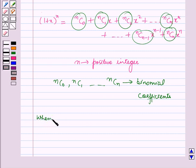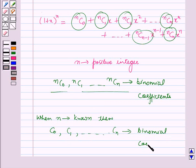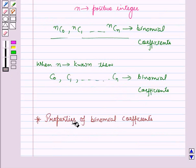When n is known, that is the index of the binomial is known, then we can write these binomial coefficients as C0, C1, and so on up to Cn. Now let us discuss the properties of these binomial coefficients.